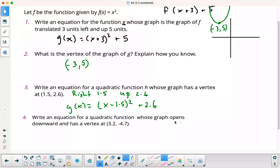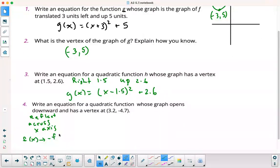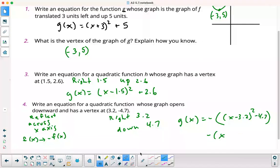This time, if it opens downward, this means I reflect across the x-axis. So for that one, I do f of x goes to negative f of x, and this is going to go right 3.2 down 4.7. My function is going to be negative, and I've got to multiply my whole function by a negative. So it's going to be negative x minus 3.2 squared minus 4.7. I would probably distribute this negative, so I'm going to get negative x minus 3.2 squared and then plus 4.7. That would be my final answer for that one.